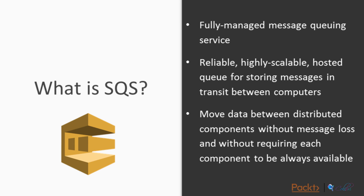You can imagine having a producer — any type of application that puts messages onto SQS, which acts as a buffer — and those messages are picked up by a consumer. If your producer goes down due to internet connectivity loss or host issues, your consumer can still read and process those messages because SQS will allow it to do so. SQS decouples your application, so even if part of your architecture goes down, the rest can still process messages.